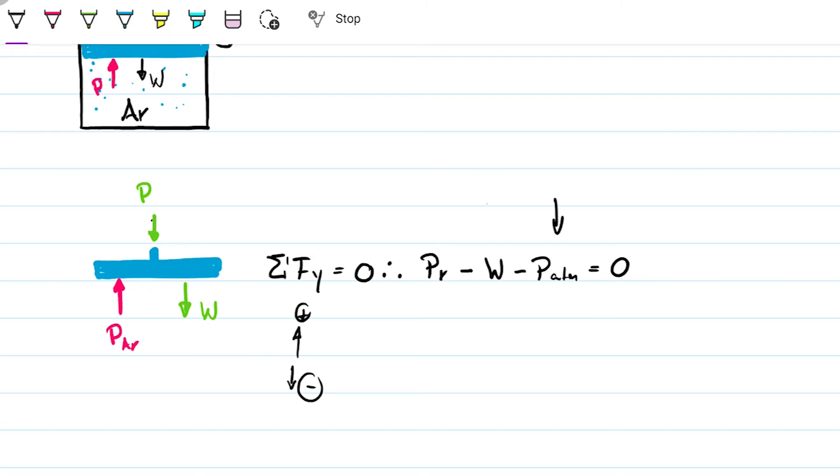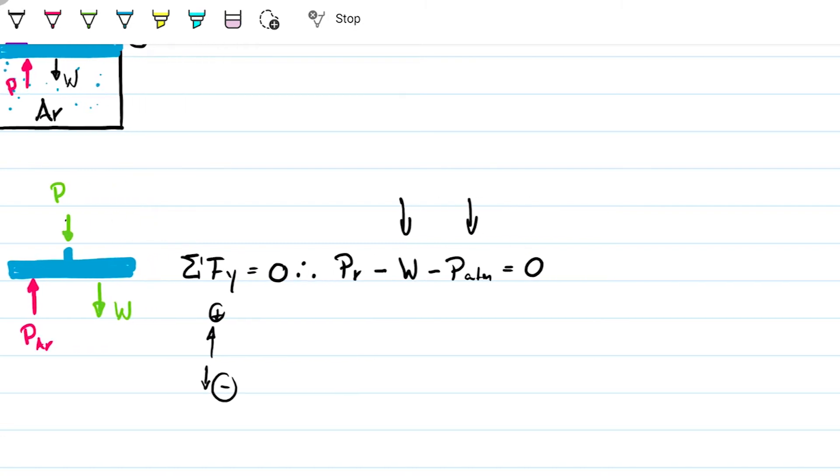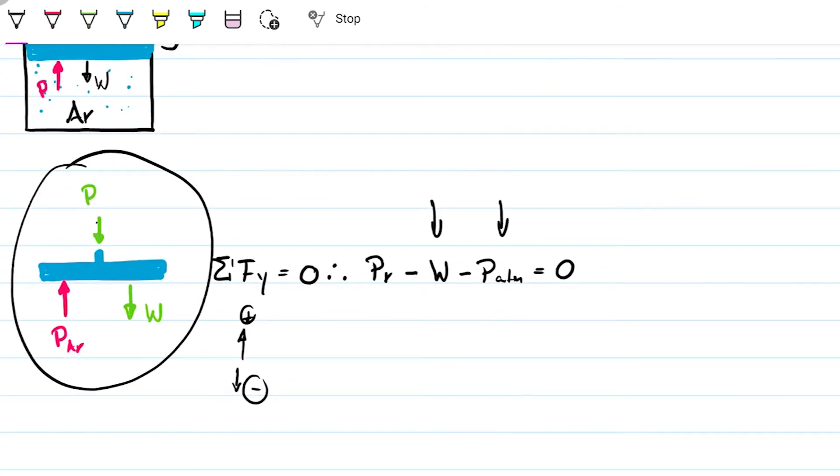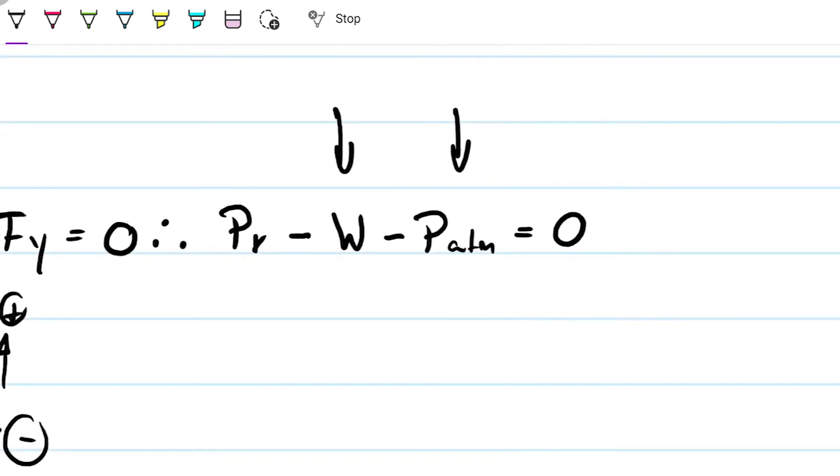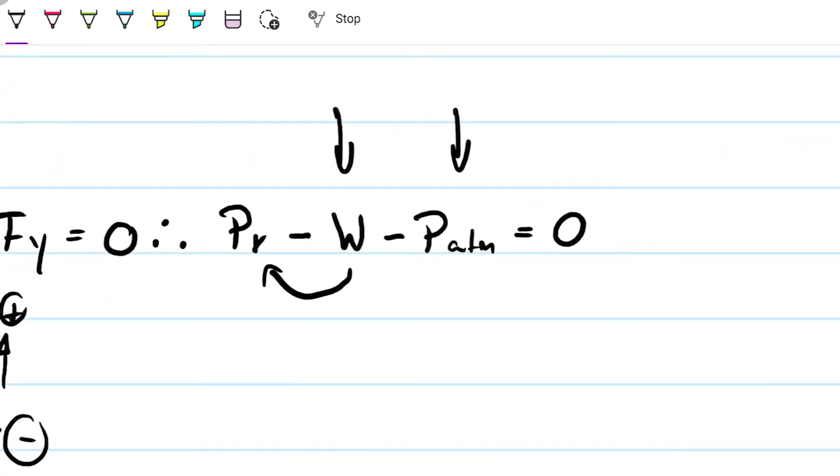Now that we know this guy, 95 kilopascals, this guy we don't know, but we can find out because we have the mass and the surface area, cross-sectional area. Now, last thing to know is that these are forces. Looking at the free body diagram, these are all forces. We can't really sum up these guys or subtract these guys if they're not all in the same units. So if one is pressure, the other one is force, then we can't do anything.